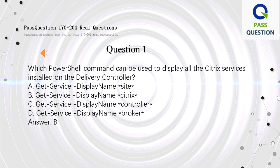Question 1. Which PowerShell command can be used to display all the Citrix services installed on the delivery controller? A. Get-Service DisplayName Site. B. Get-Service DisplayName Citrix. C. Get-Service DisplayName Controller. D. Get-Service DisplayName Broker. Answer: B.